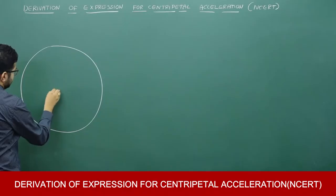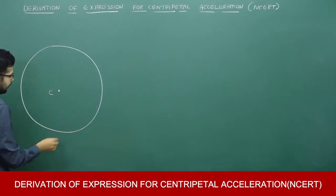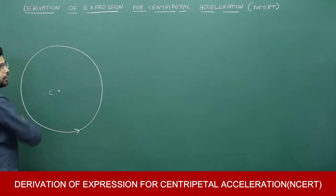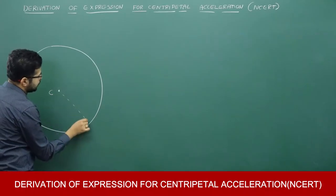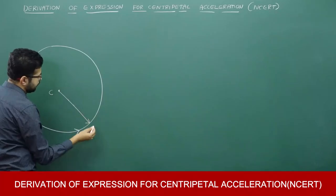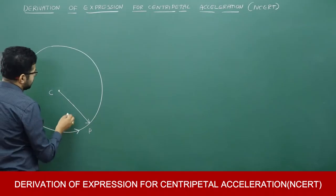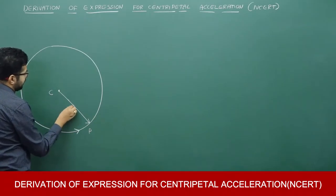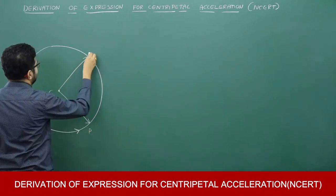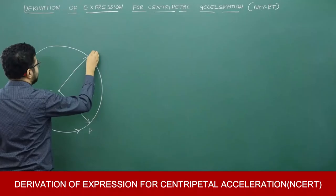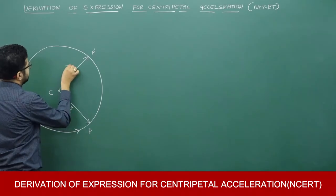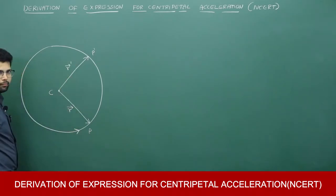Say this is the center of the circle C, and this is the sense of motion, the sense of revolution of the particle. At time t = 0, the particle is at point P, and the corresponding position vector of the particle let it be r. After some time, the particle is at point P', and the corresponding position vector let it be r'.